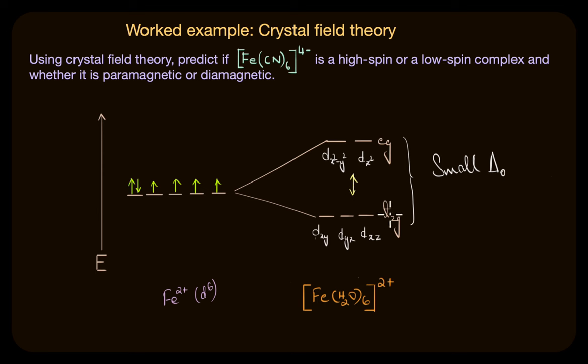The eg and t2g levels are closer to each other than we saw in the case of [Fe(CN)₆]⁴⁻. How does electron filling take place here? Let's see. Here again we can fill up the first 3 electrons in the t2g orbital. Now, where does the 4th electron go? Do you think it would pair up in the t2g orbital or will it go to the higher energy eg orbital?